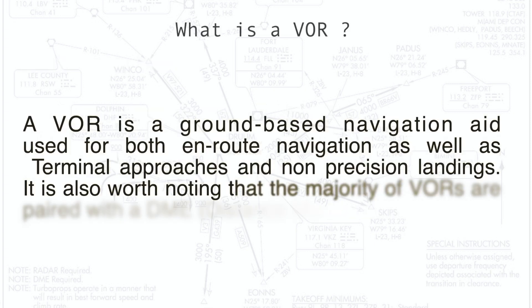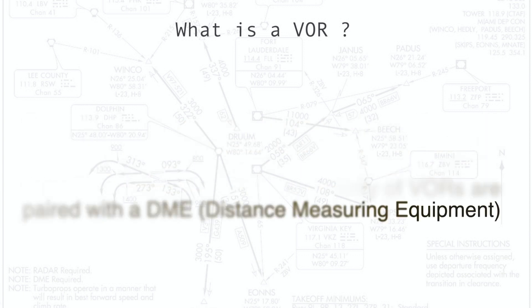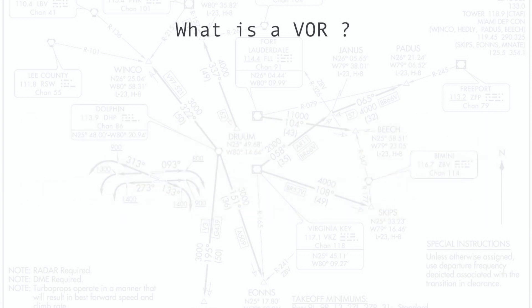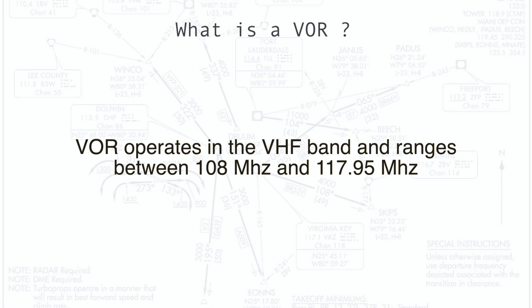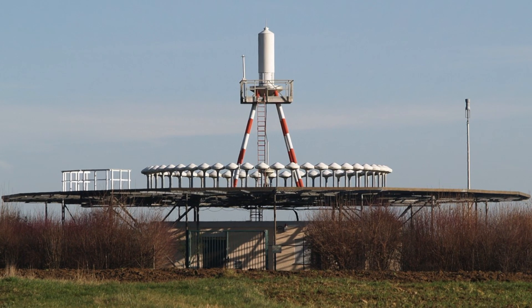A VOR is a ground-based navigation aid used for both en-route navigation as well as terminal approaches and non-precision landings. It is also worth noting that the majority of VORs nowadays are paired with DME. VOR operates in the VHF band and ranges between 108 and 117.95 MHz frequencies. And this is what it looks like in real life.